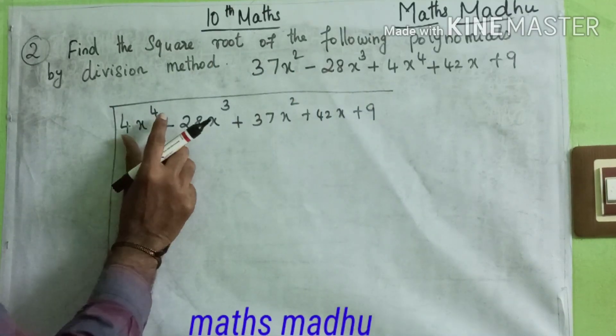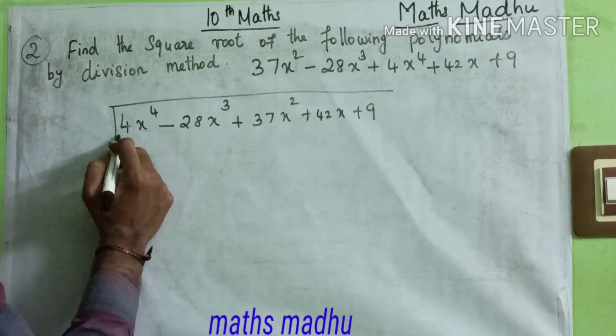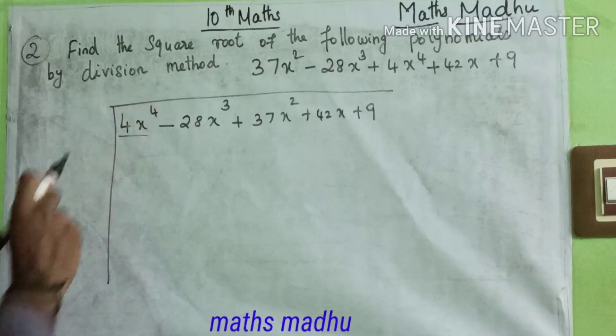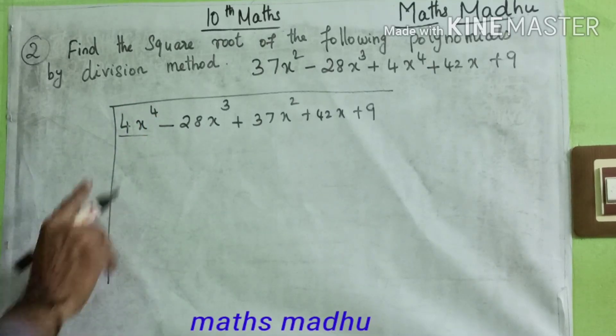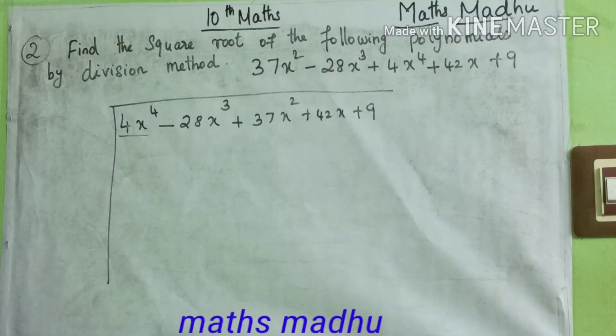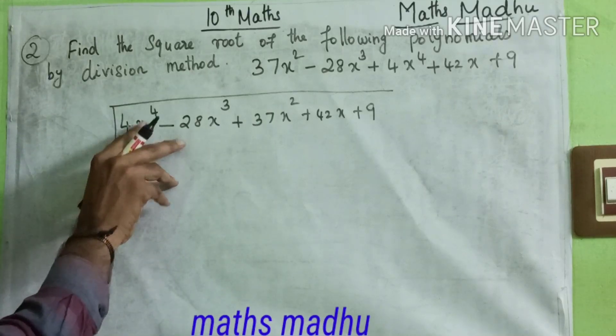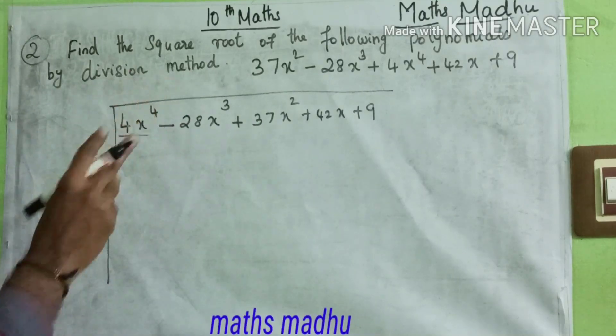So first number, if we take the first digit, nothing here but 4x square. So first number, you know, square number and number 2.